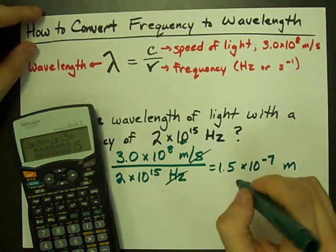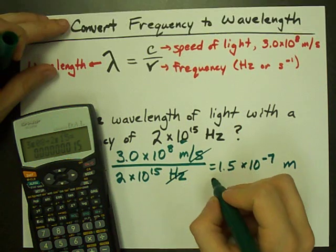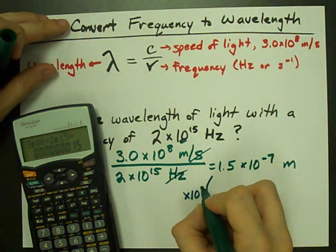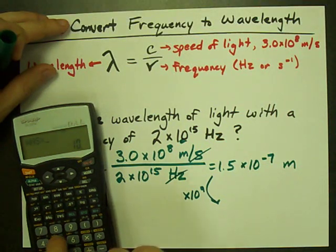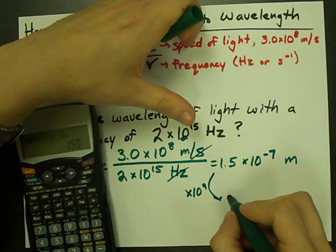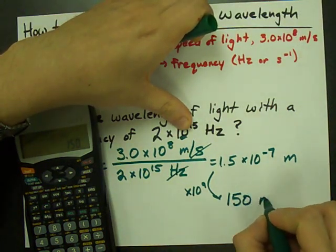If you want to convert that to nanometers, what I would do is multiply by 10 to the power of 9. It's actually 150 nanometers.